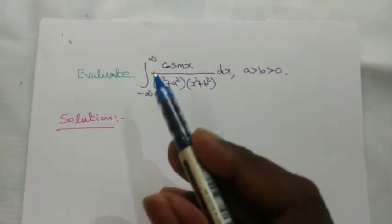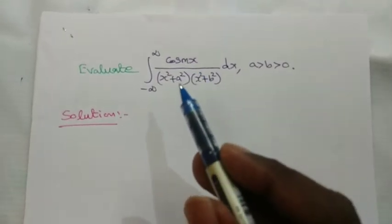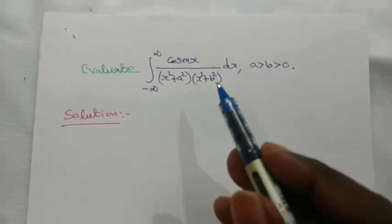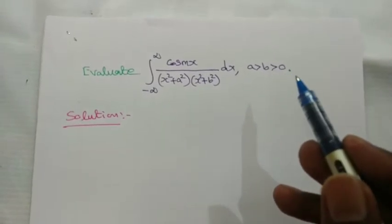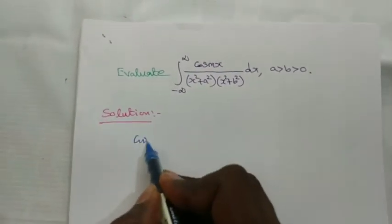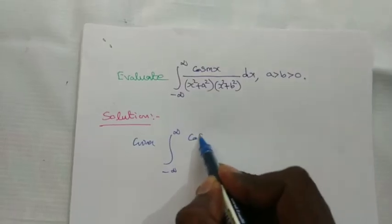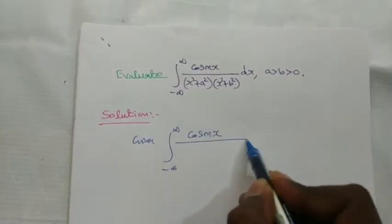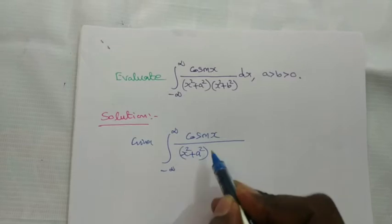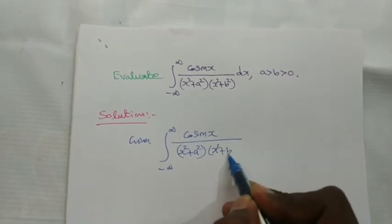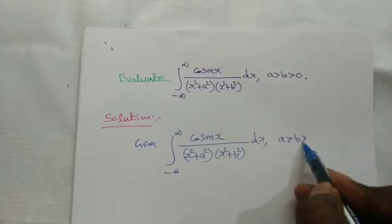Evaluate the integral from minus infinity to plus infinity of cos(mx) divided by (x² + a²)(x² + b²) dx, where a > b > 0.